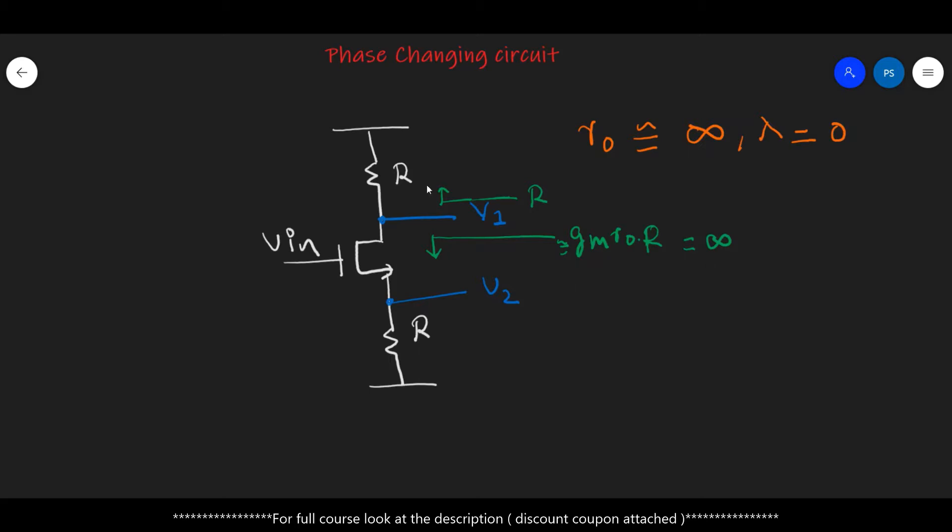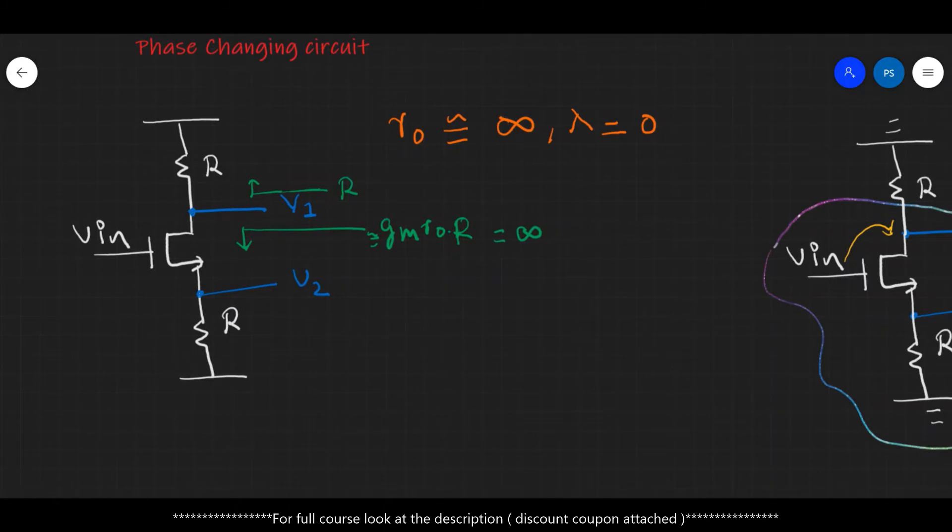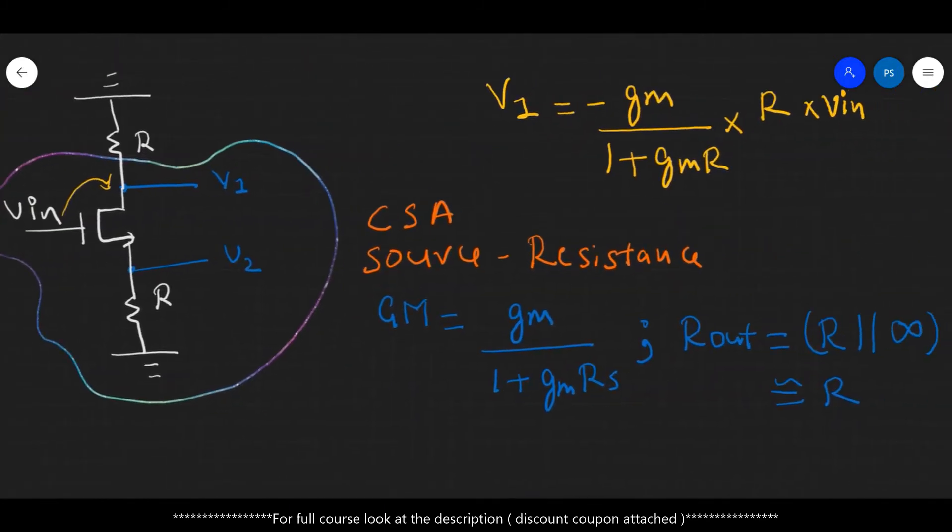So under this condition, let us find out the voltage V1 at the drain and the voltage V2 at the source, and we will build a relation between these two. Okay, now let's proceed forward and see how we can analyze the circuit.